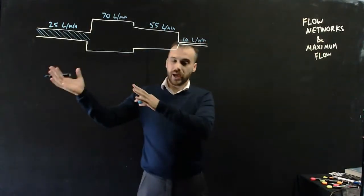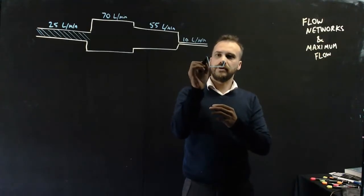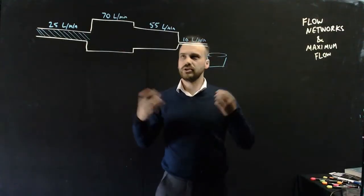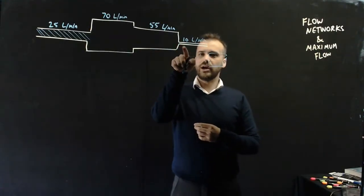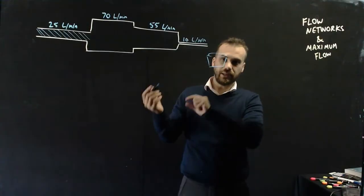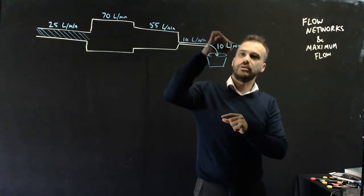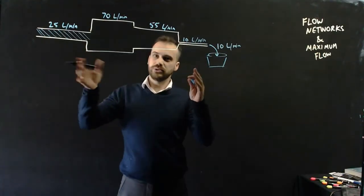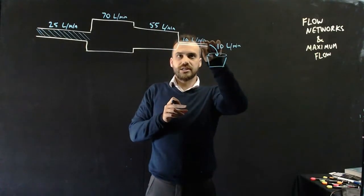What happens across this series of four pipes is that a bucket waiting for water isn't going to fill at 70 litres per minute. It's not going to fill at 25 plus 70 plus 55 plus 10, because this pipe is what we call a bottleneck. It can only get through as fast as the smallest pipe allows. So this bucket fills at 10 litres per minute. Across a series of pipes, water can only flow at the rate of the smallest pipe.